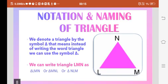Now I will tell you how to denote and how to write the name of a triangle. Instead of writing the word triangle again and again, we can denote it by a symbol. And we can write triangle in three different ways. We can start from any point and go to another point. So we can write triangle LMN as triangle LMN, or triangle MNL, or triangle NLM.